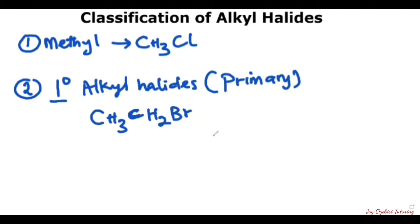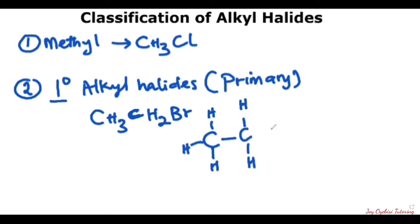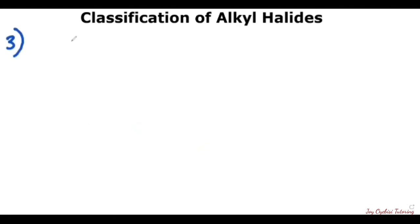If I draw this out, so if you are in doubt, always draw out the structure. We can see that this bromide, which is the halogen, is attached to this carbon. The carbon with the halogen will be attached to only one carbon. If it is attached to just one other carbon, then it's a primary alkyl halide.